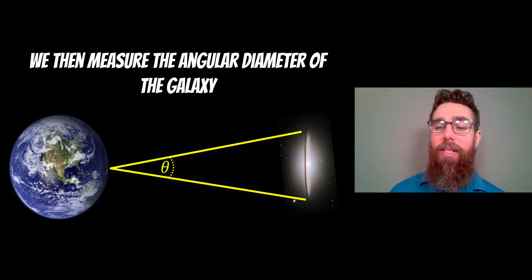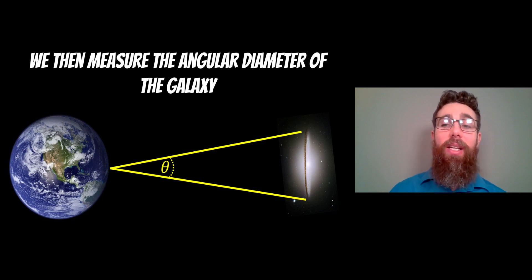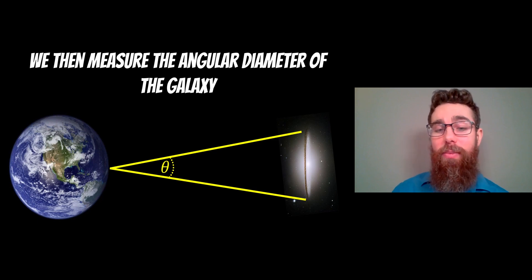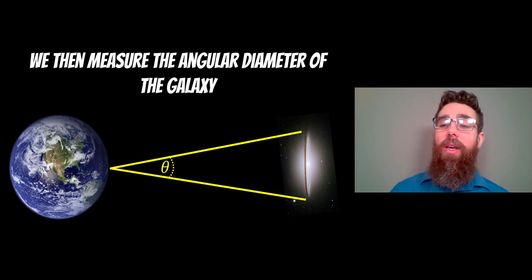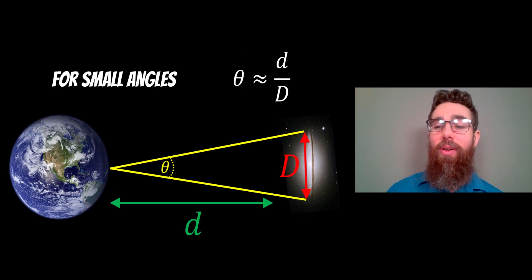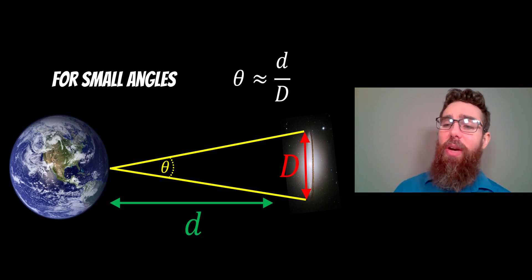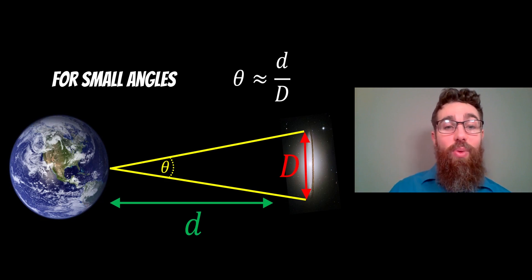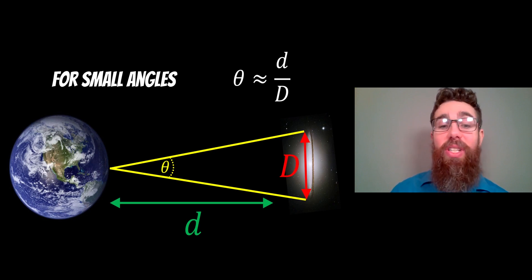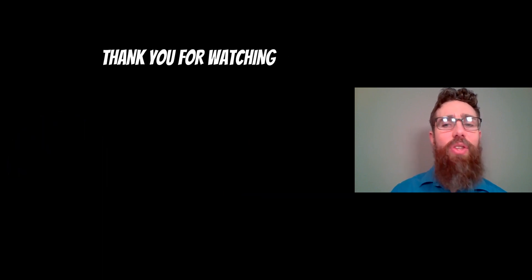Once we have the distance to the galaxy, we then only need to measure the angular diameter — the angular size of the galaxy in the sky as observed from Earth. This is fairly straightforward; we get an angle of how big it appears, which will probably be arc minutes or something like that. We then use that relationship to get the actual linear diameter of the galaxy. So fairly straightforward — we just need to get the distance of the galaxy first. Thank you for watching.